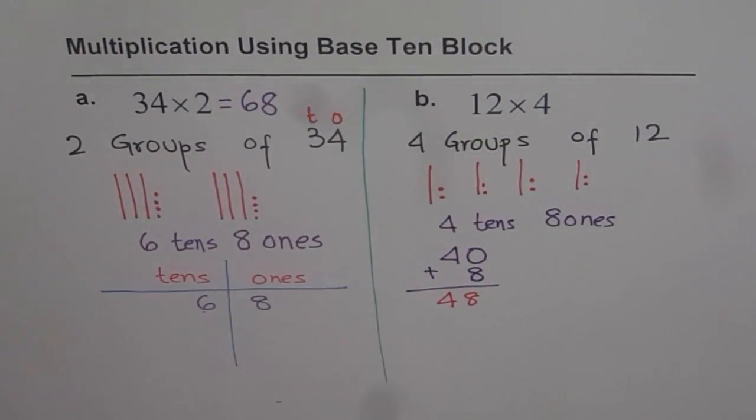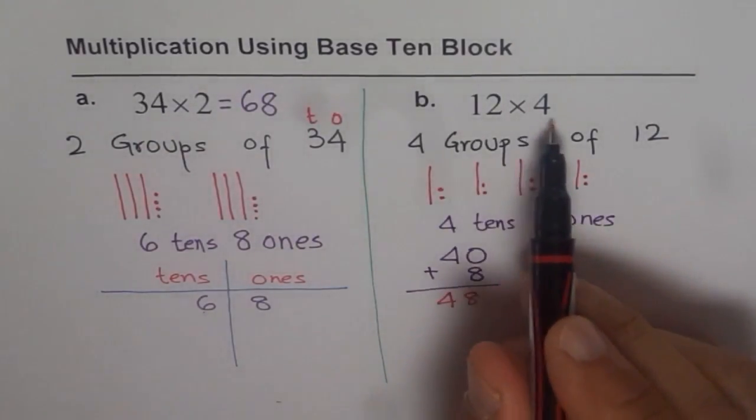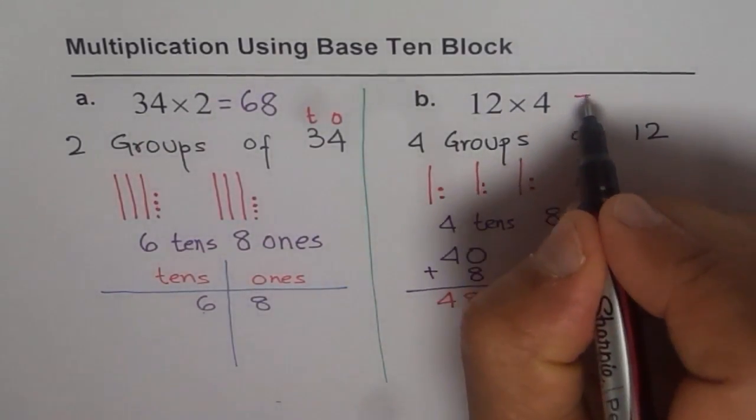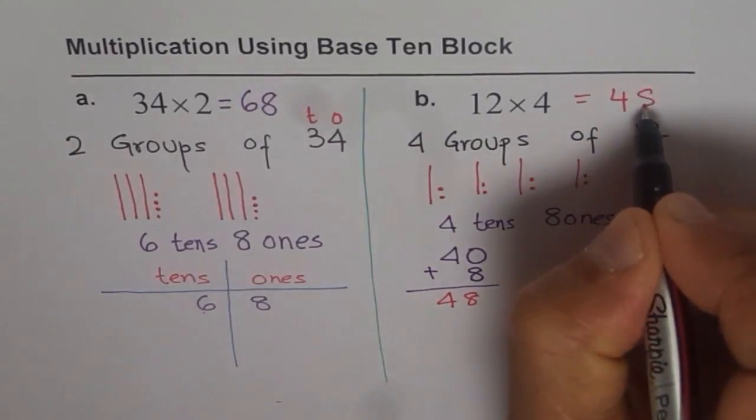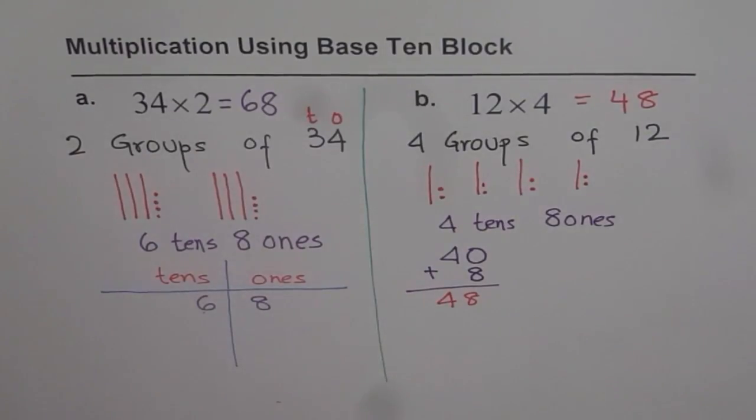So that is our answer now. 4 groups of 12, that means 12 times 4 is the number 48, right? So we can write after getting 4 tens and 8 ones like this also, right? This is good. I hope you understand it. Let's do some more questions. Thank you.